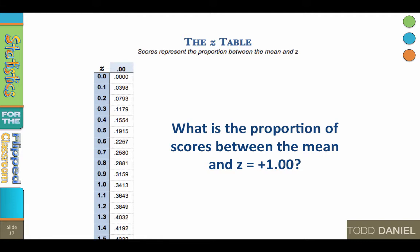Let's look for the proportion of scores between the mean and a z of positive 1.0. So look down this first column until you see the z-score of 1.0. The proportion that you find there is 0.3413.